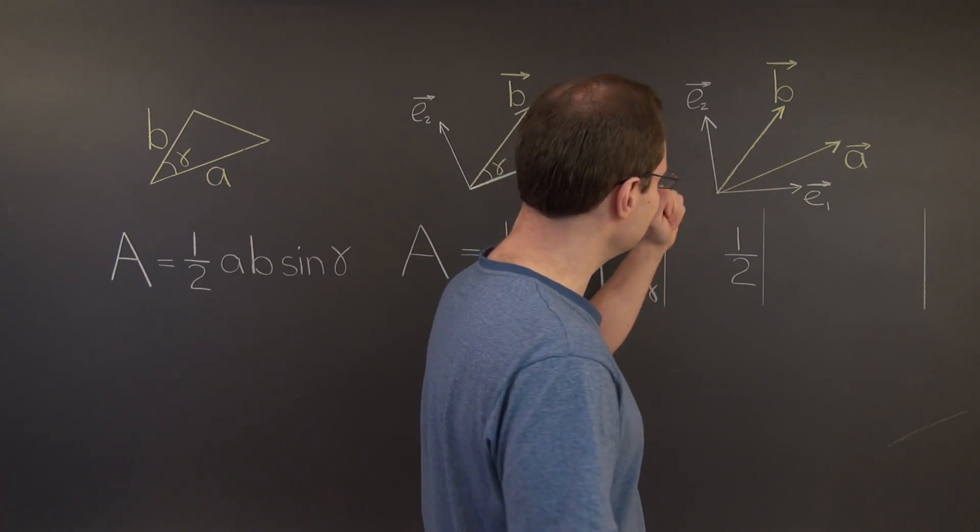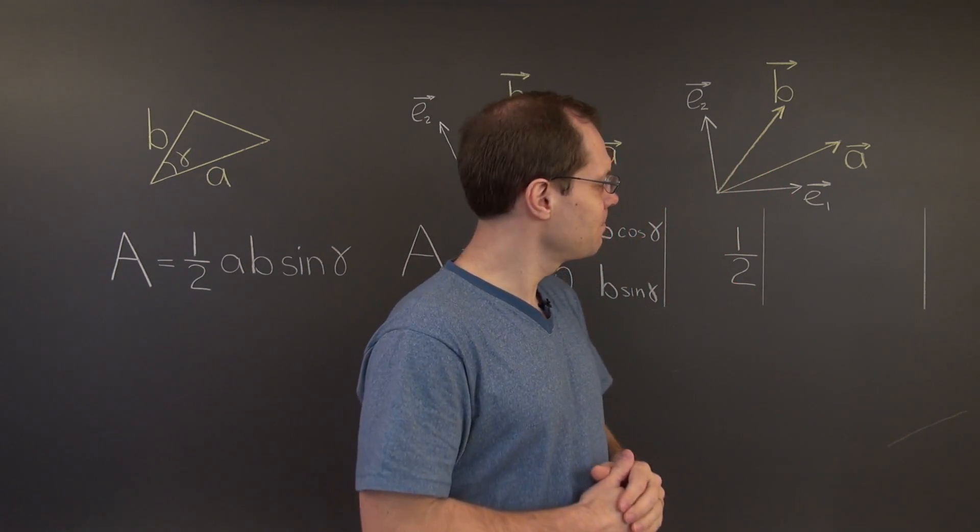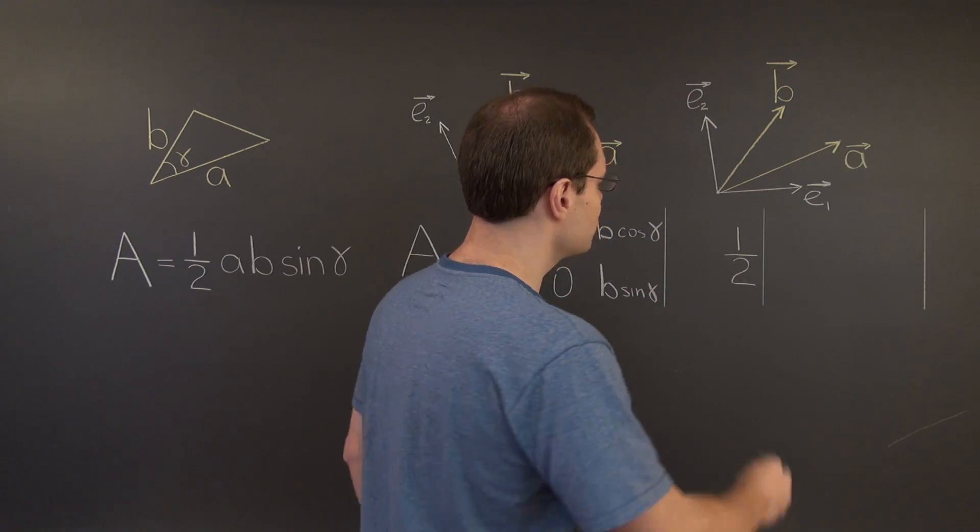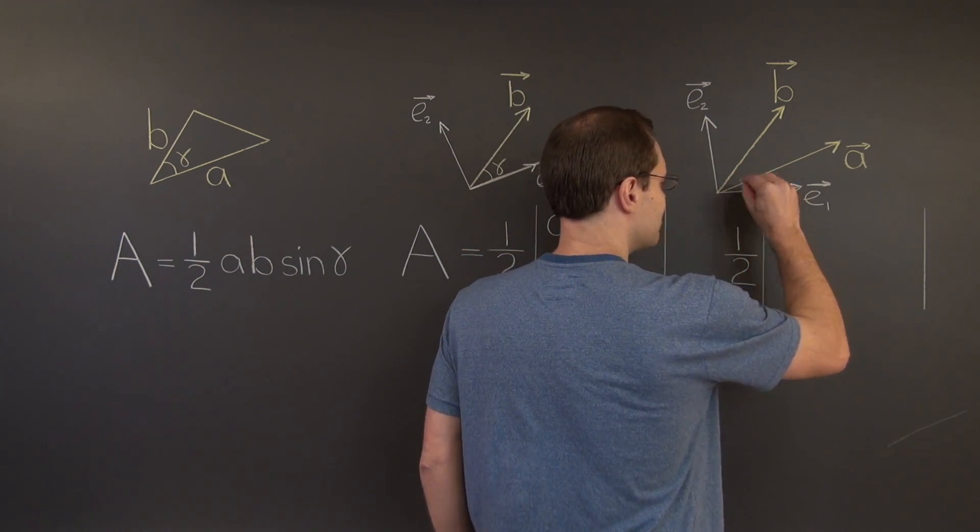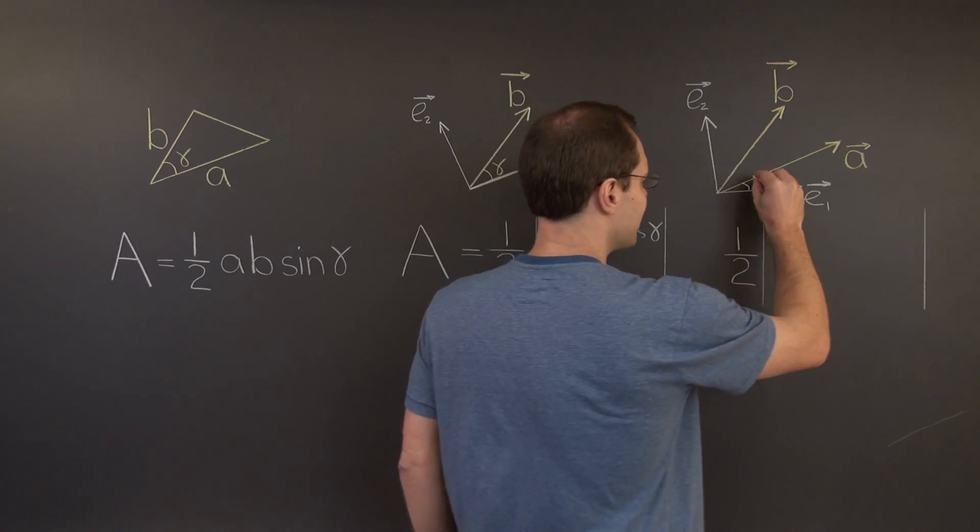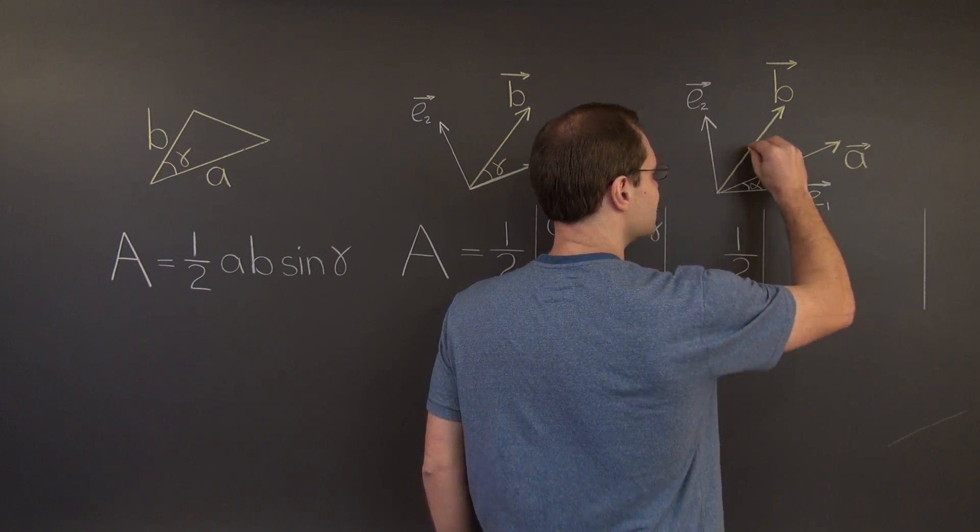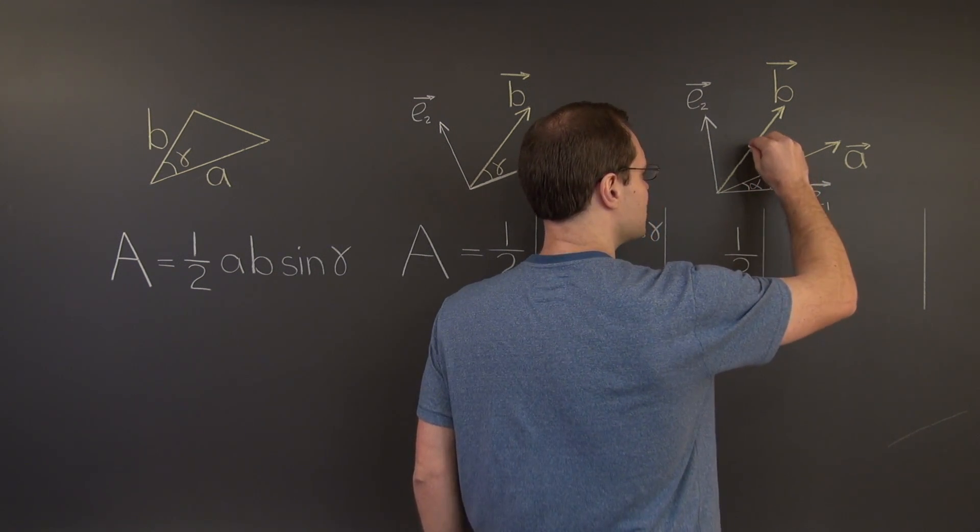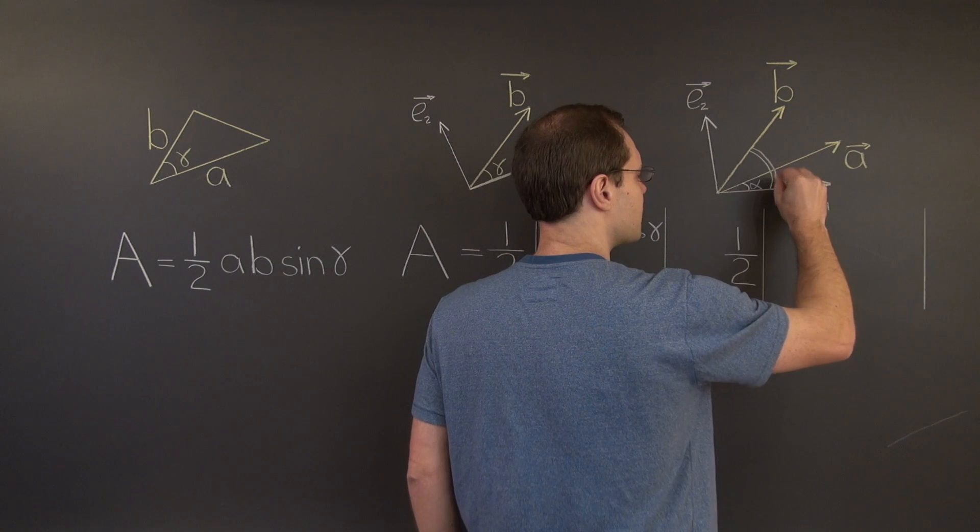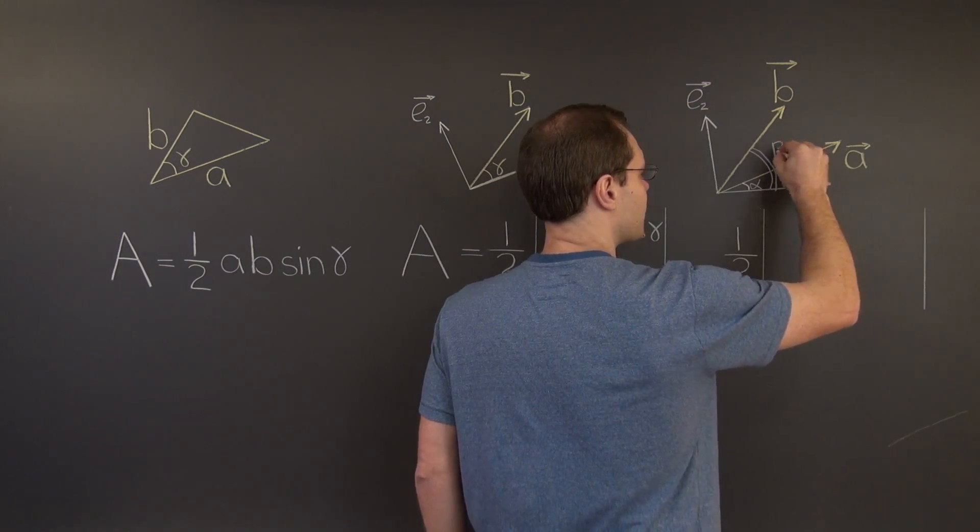I oriented the basis in a more random way. So now these vectors form two angles with, let's say, E1. E1, let's call this angle alpha. And let's call the angle that B forms with E1, beta.